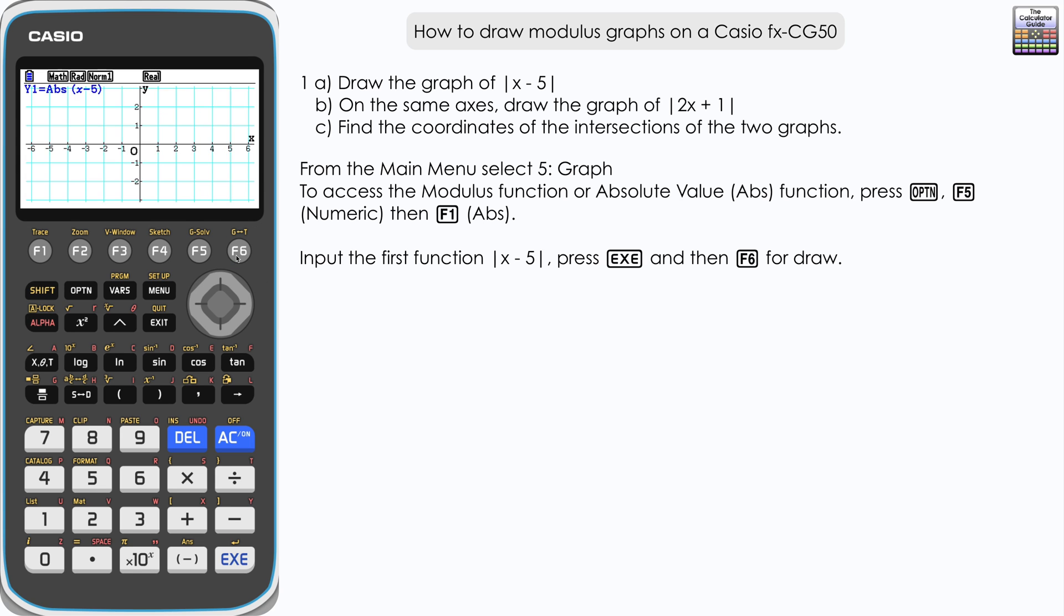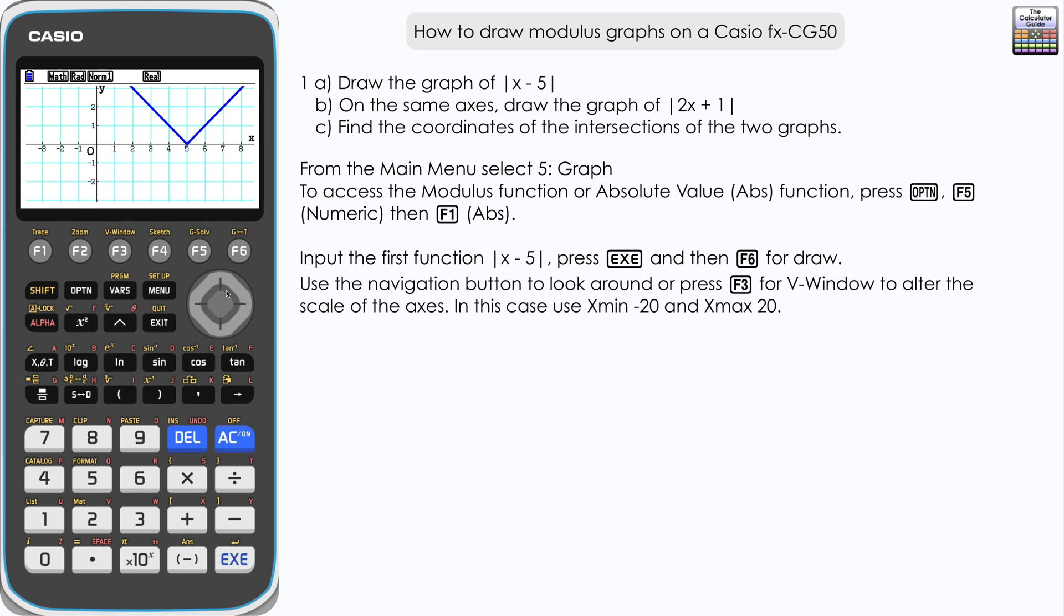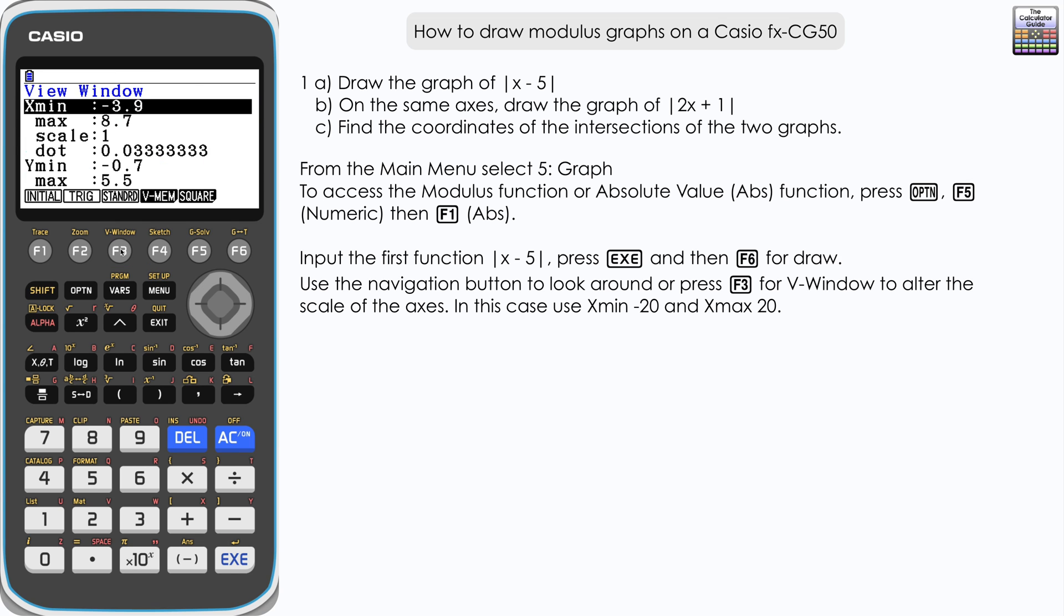It's not quite in the center of the screen. You can use the navigation buttons to center it. Press F3 for V window to broaden what we can see. Let's go for the x minimum of negative 20 and max of 20, and the same for the y. This will help us see our intersections when we introduce the second graph from part B.